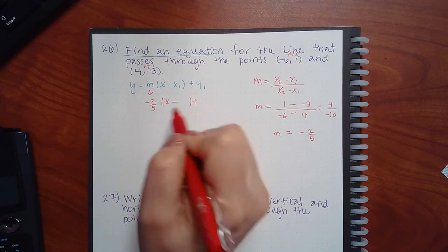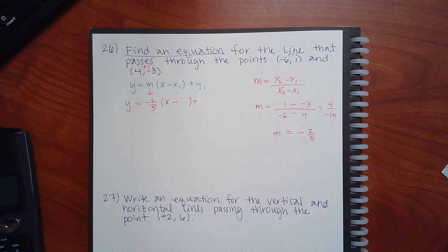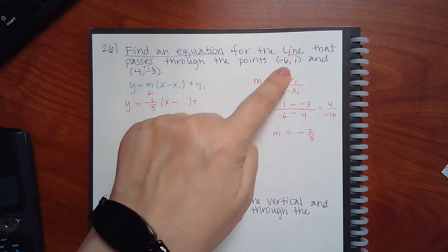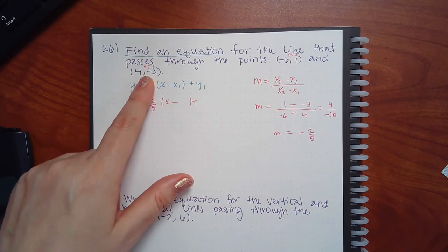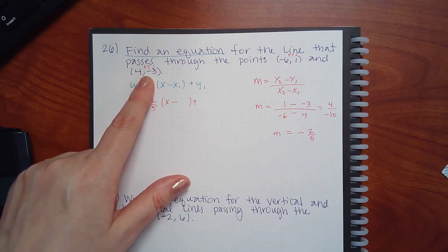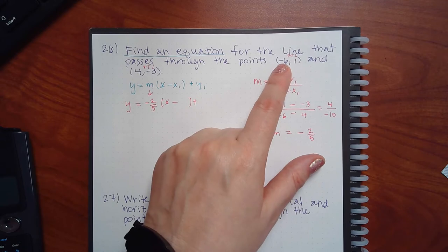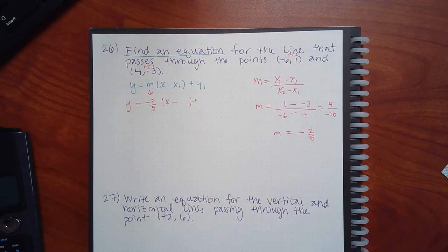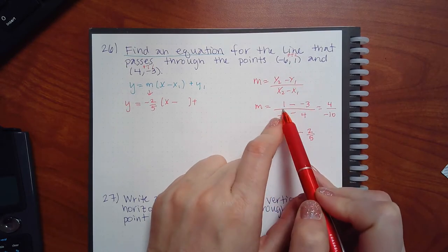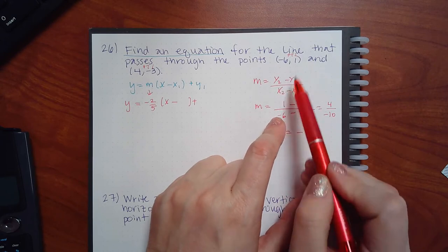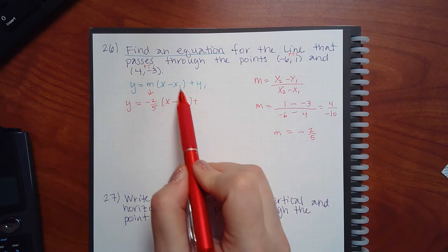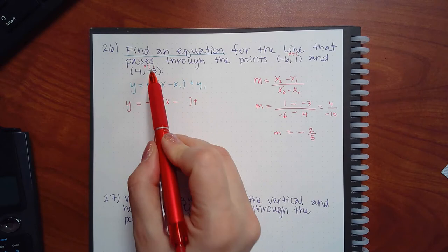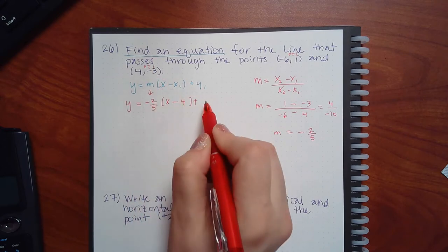Now you need to pick an x1 and a y1 — you cannot pick one coordinate from here and one from there. You have to pick one whole point. Since he called this one point one, that's the x1 and y1 I'm going to use. If you had called the other one point one, then you'd use its coordinates. By telling me one point's coordinates first, you made that point two.